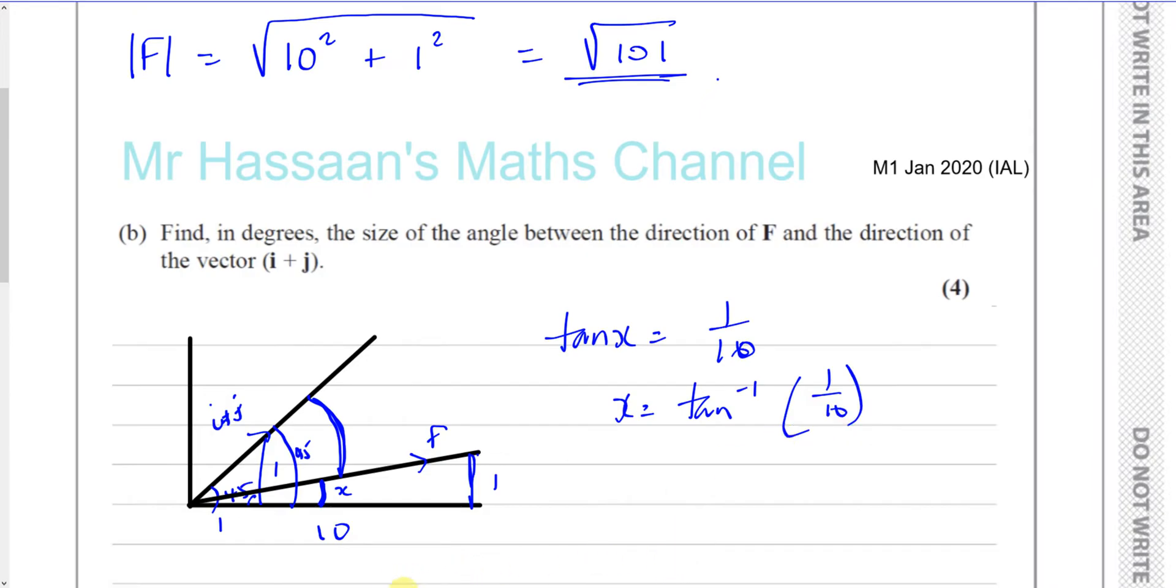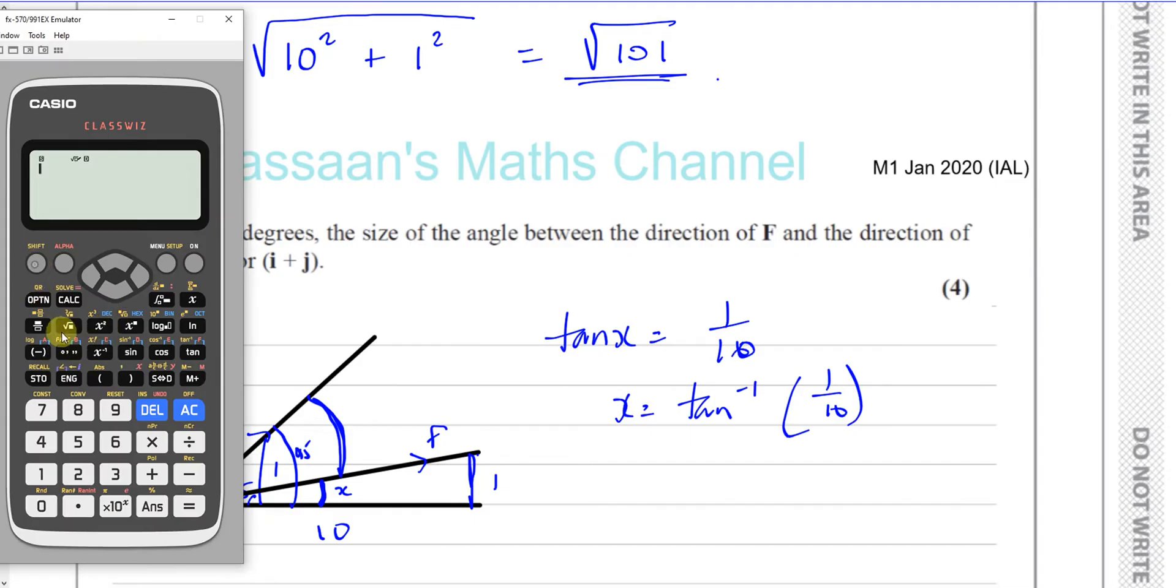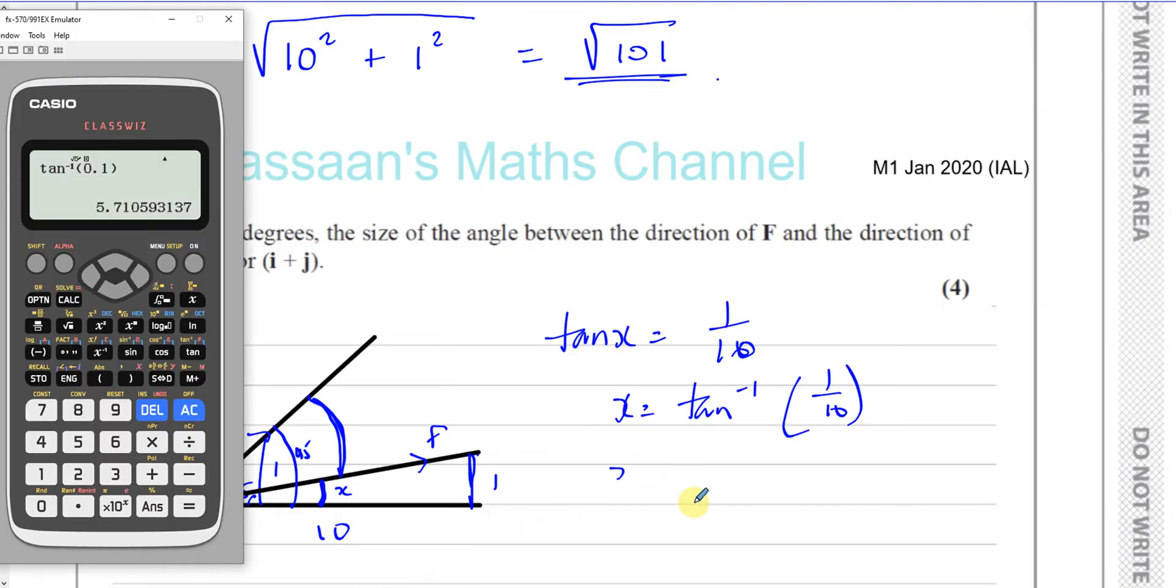Okay, so we'll just get the calculator. So, you have inverse tan of 1 over 10, which is 0.1. That gives you 5.71 degrees. Just making sure I'm in degree mode I am, yeah. So, X is equal to 5.72 degrees.